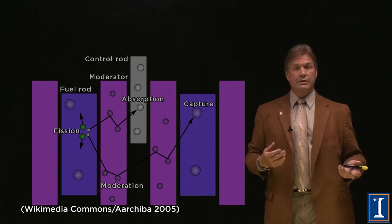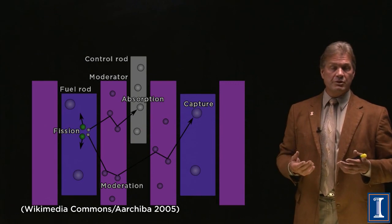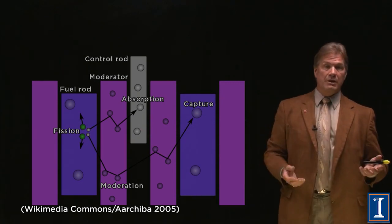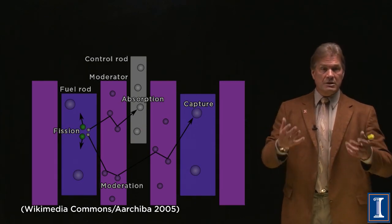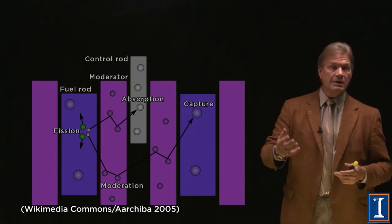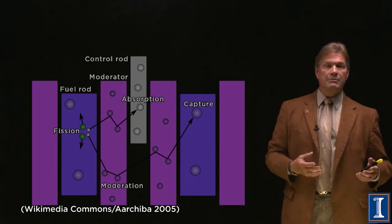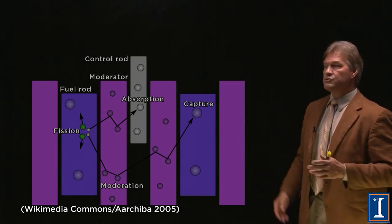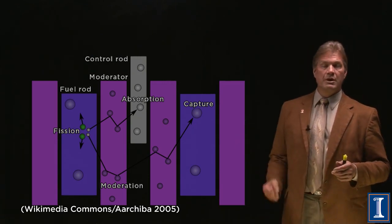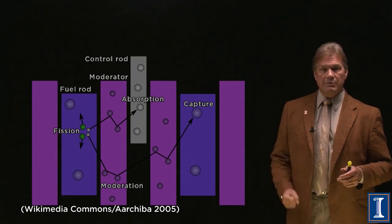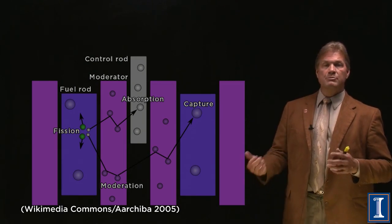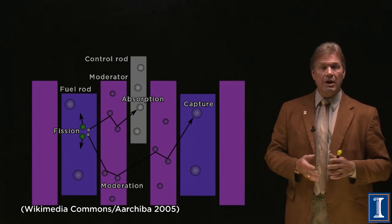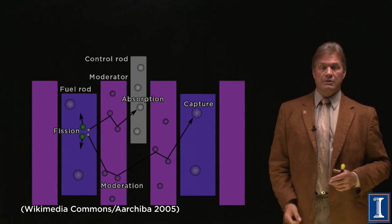There are certain substances whose nuclei do that. Boron, for instance — Boron-10 will absorb a neutron and become Boron-11. It's not radioactive; it just likes neutrons. Gadolinium, cadmium — there are a variety of materials that are wonderful neutron absorbers. You stick them in the reactor, they absorb the neutrons, no neutrons dancing around, no chain reaction.